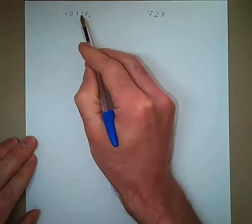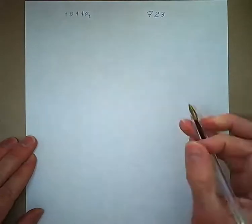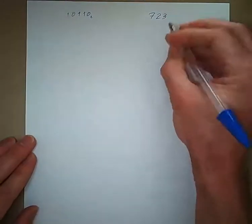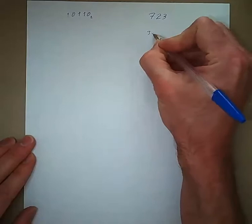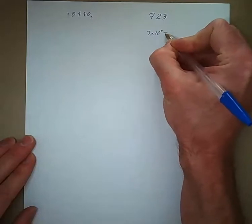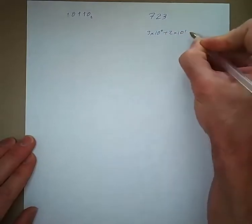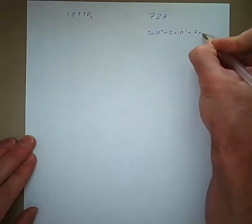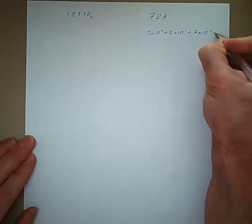This is the 1's, the 2's, the 4's, the 8's, and the 16's place. So this is equivalent to 3 times 10 to the 0 plus 2 times 10 to the 1 plus 7 times 10 to the 2 equals 723.